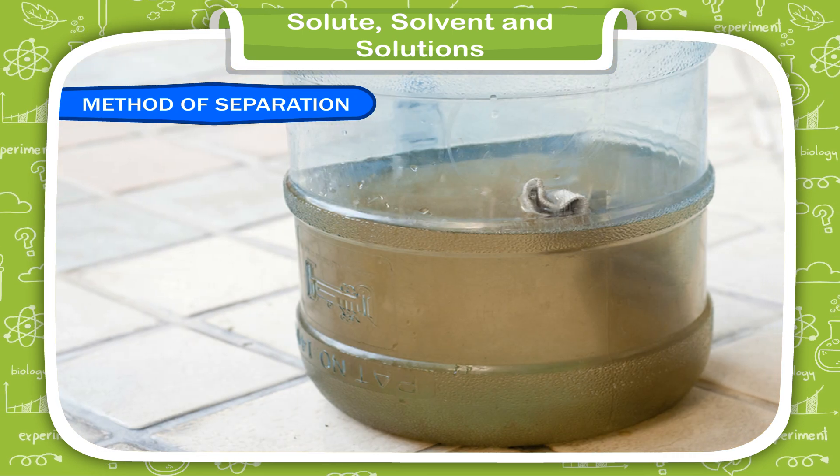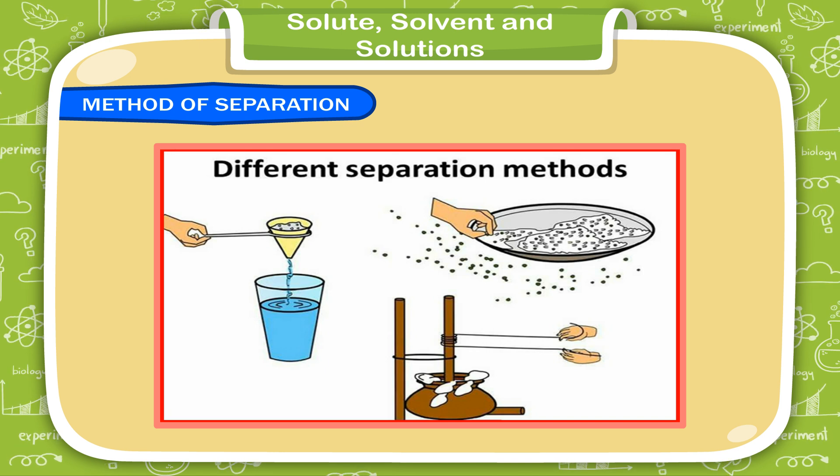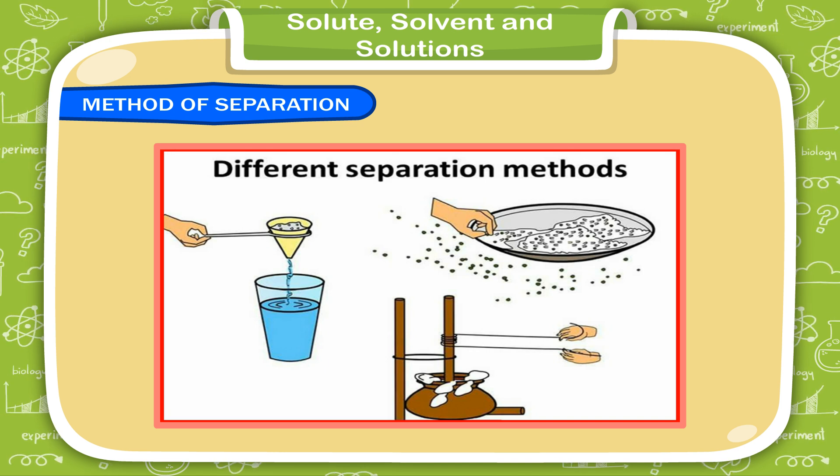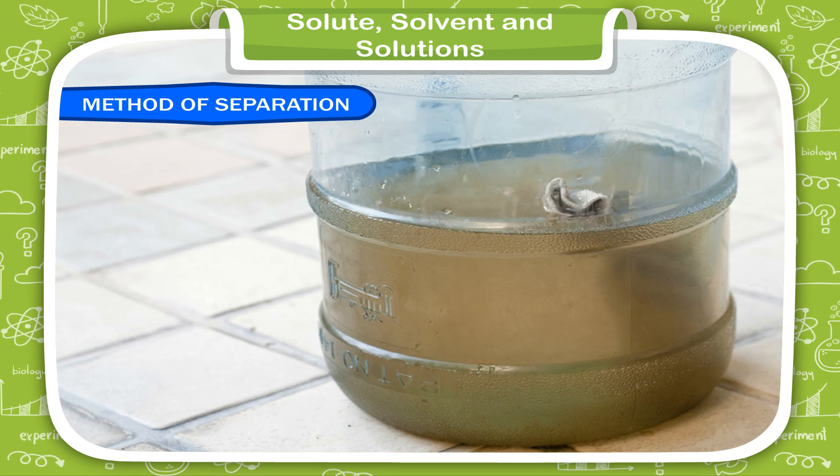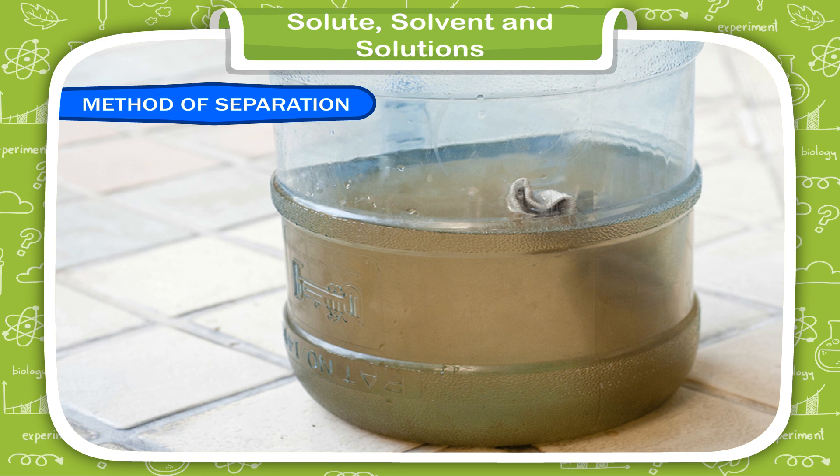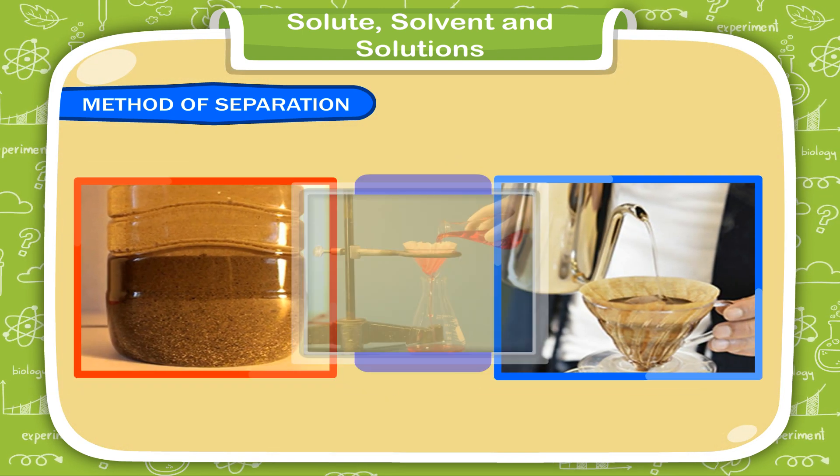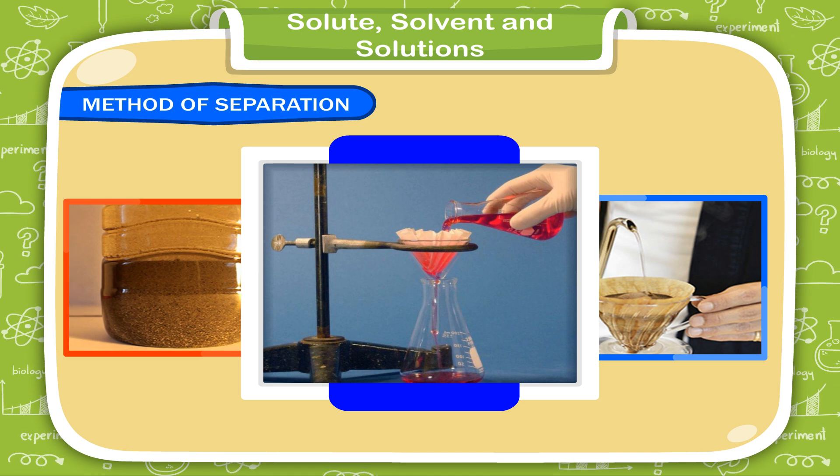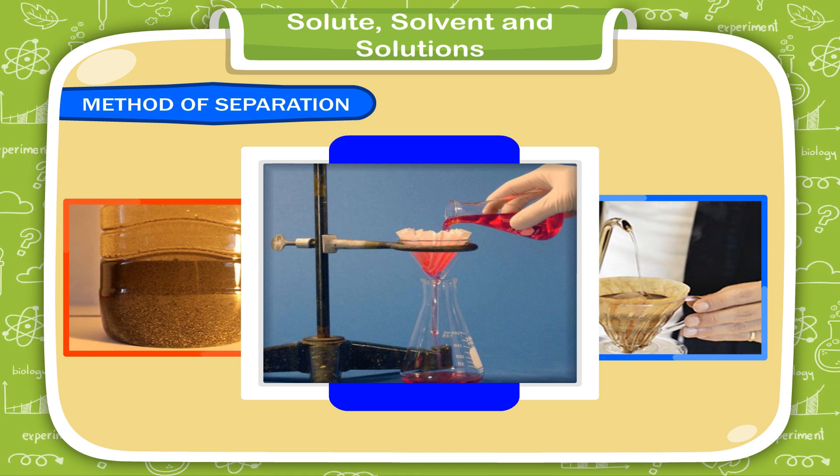Method of separation. There are several methods of separating soluble and insoluble substances from the mixtures. Insoluble substances can be separated by the process of sedimentation and decantation and filtration, whereas soluble substances can be separated by the process of distillation.